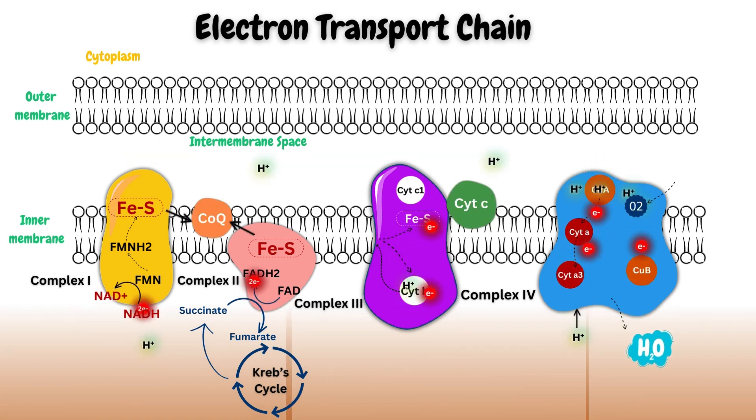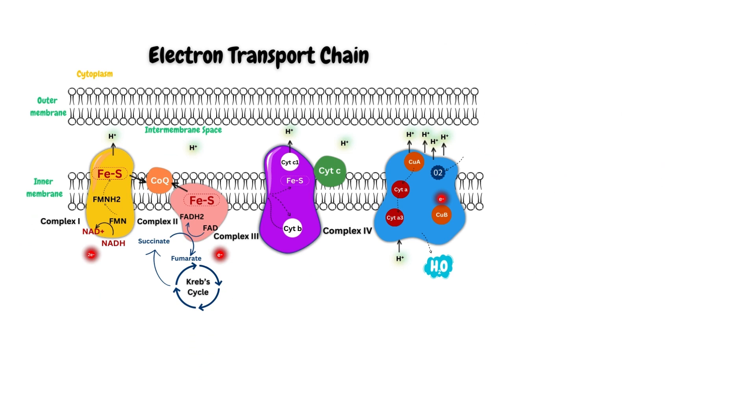As electrons move through complexes 1, 3 and 4, the energy is used to pump protons from the mitochondrial matrix to the intermembrane space, creating proton gradient. Protons are used for ATP synthesis during chemiosmosis, which I will discuss in another video.